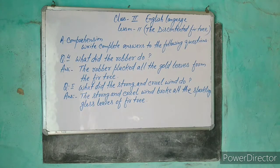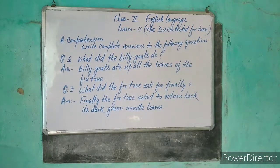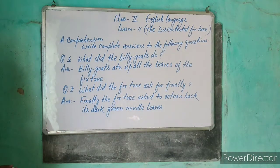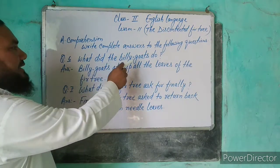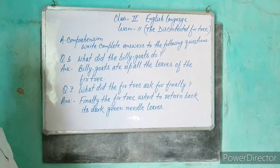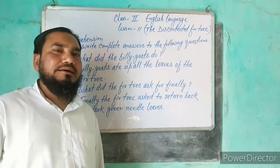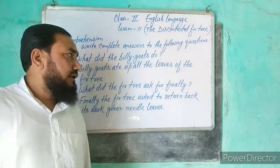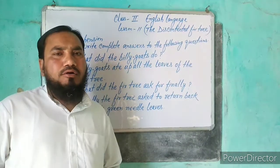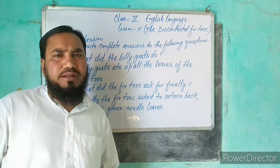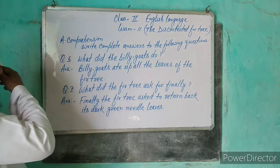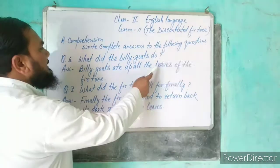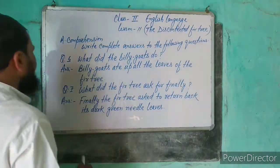अब हम लोग अगला question देखते हैं — Question number 4 और 5 था। अब हम लोग 6th और 7th देखते हैं। Question number 6: What did the billy goats do? Billy goats ने क्या किया furtree के साथ? Billy goats आये, उन्होंने देखा मुलायम बड़े-बड़े पत्ते और उन्हें खाना शुरू कर दिया, और इस तरह से पूरी पत्तियों को खा लिया। Answer: Billy goats ate up all the leaves of the furtree।